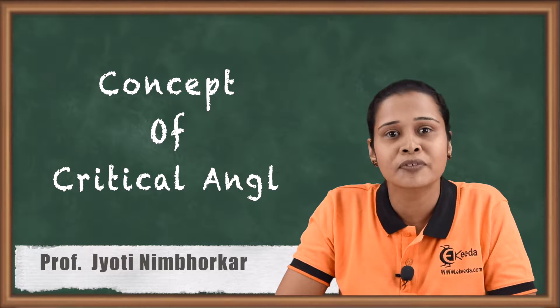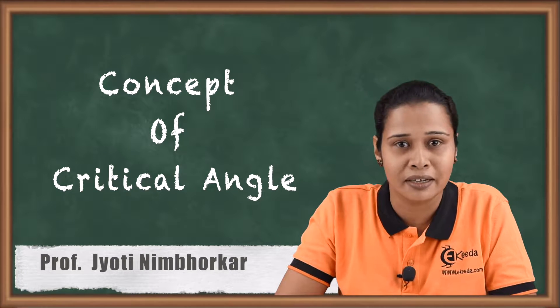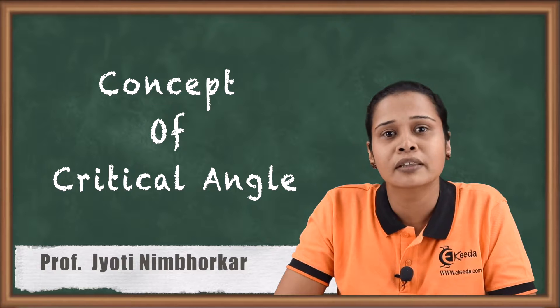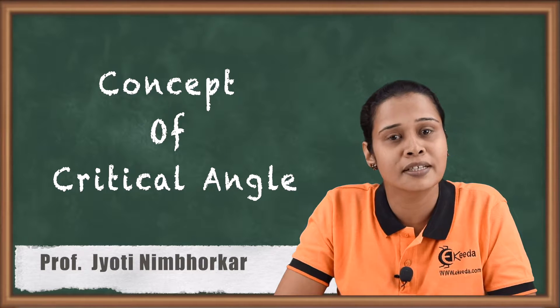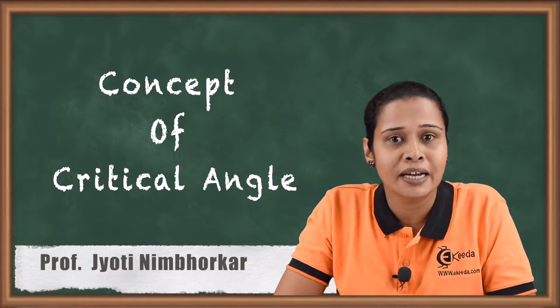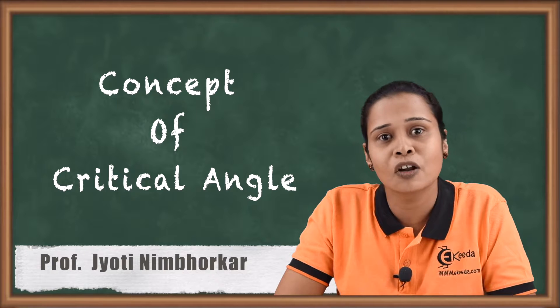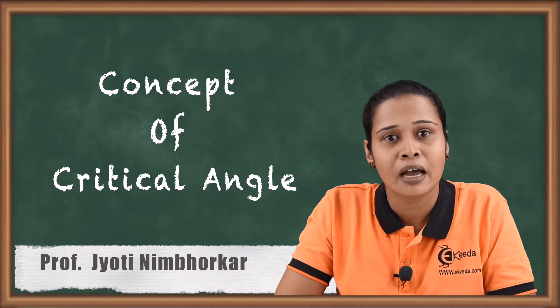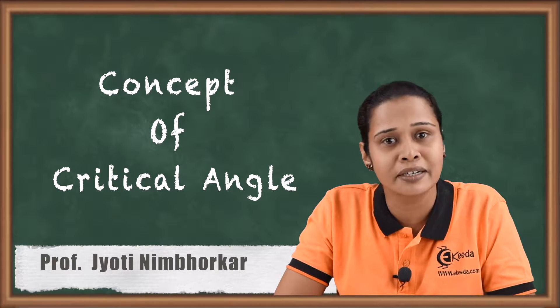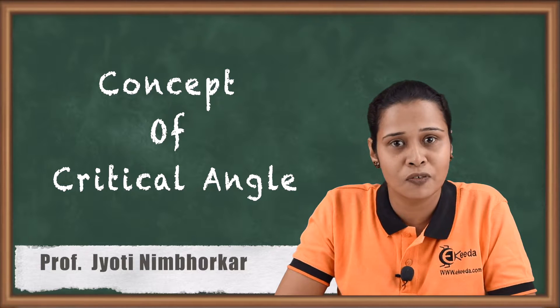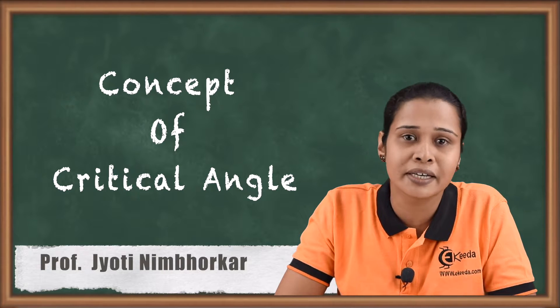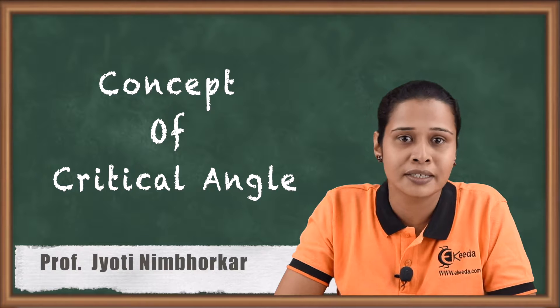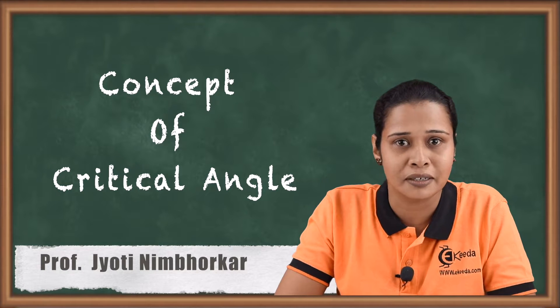Hello friends, today we will see the concept of critical angle. Now, when the ray of light travels from denser to rarer medium, if we have an angle of incidence such that angle of refraction is 90 degrees, then that angle of incidence is called the critical angle. Let us see briefly what is critical angle.